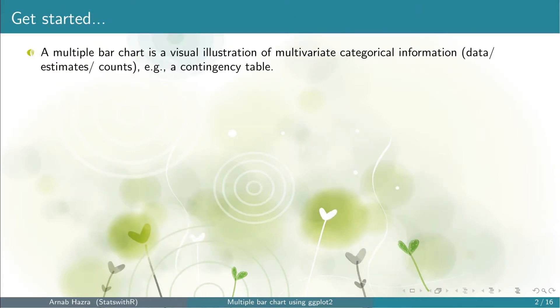A multiple bar chart is a visual illustration of multivariate categorical information, which can be data, some estimates, or some counts — for example, a contingency table.